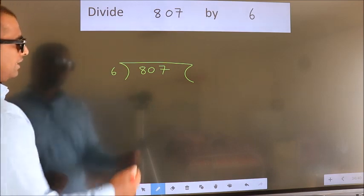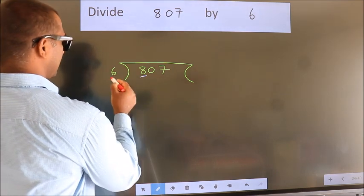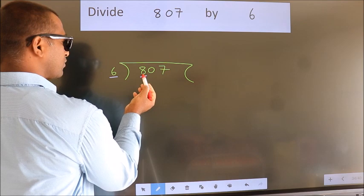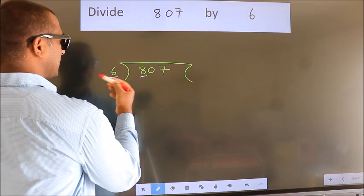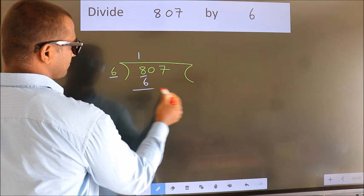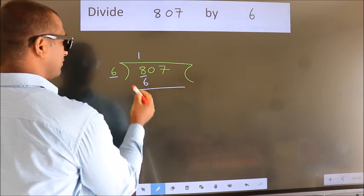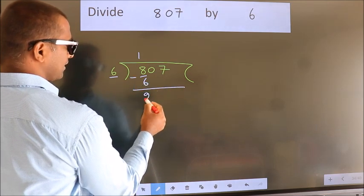Next. Here we have 8, here 6. A number close to 8 in the 6 table is 6 once: 6. Now we should subtract. We get 2.